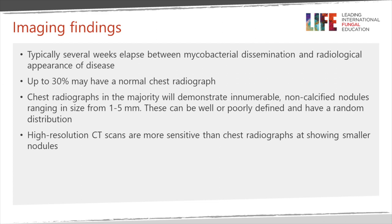It typically takes several weeks for the small foci of disease within the tissues to develop enough to be radiologically appreciated. A single mycobacterial organism can't be seen on the CT scan — we have to wait for cell-mediated immunity to cause these granulomas. Depending on what stage we catch the patient, up to a third or so may have a normal chest radiograph, though sometimes a CT scan may appreciate the granulomas.